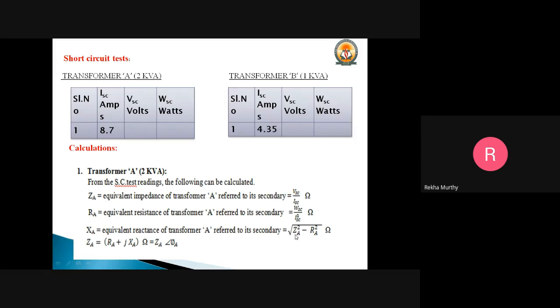So it is square root of Z square minus R square. Then we can write that ZA as nothing but RA plus j into XA in the rectangular form, and also it can be written in polar, that is ZA with an angle of psi A.